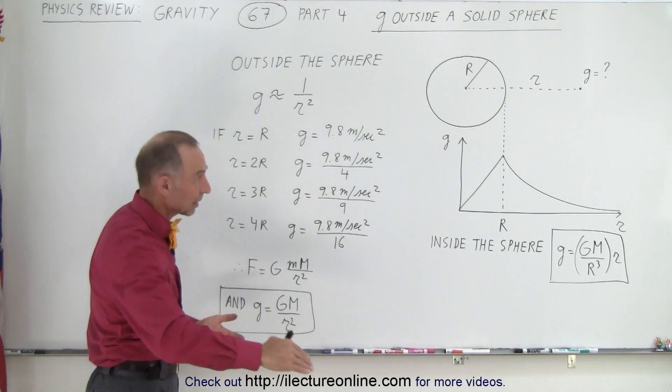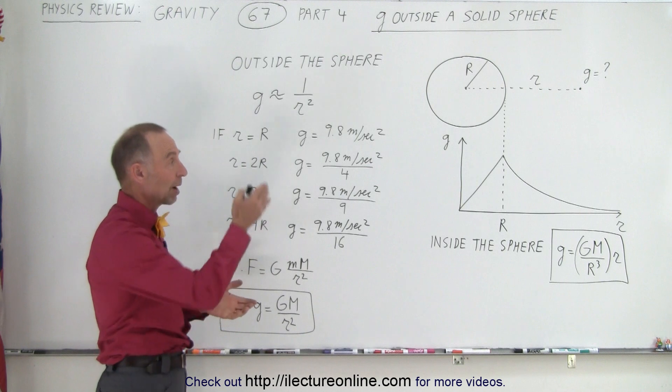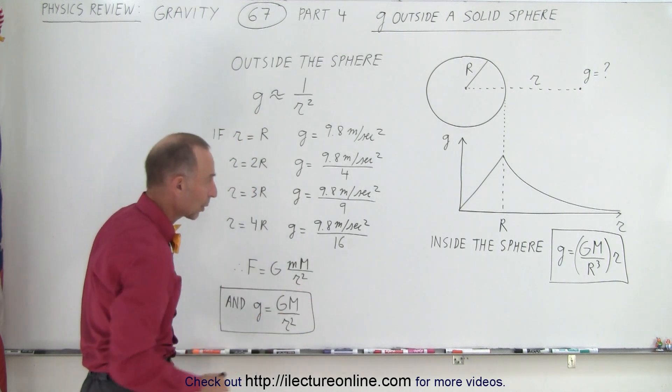So you can see that the acceleration due to gravity and the force of gravity drops off as a function of 1 over r squared, which is rather quickly.